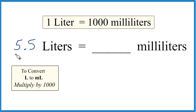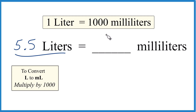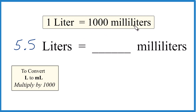Here's how you convert 5.5 liters to milliliters. First off, we know that one liter is a thousand milliliters — this is the conversion factor. So if we had 5.5, we should have a lot more than a thousand milliliters in our final answer.